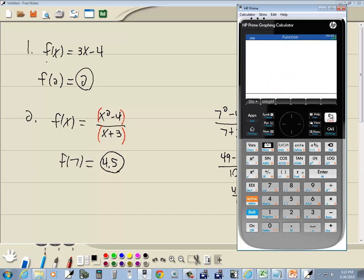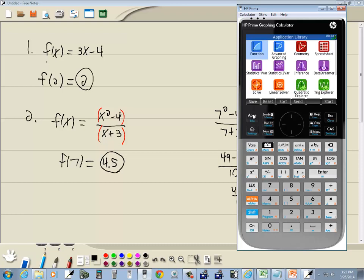I had to be in the first column to hit escape. That's interesting. And it throws you back here. Or you can press apps and go back to your main menu. Anyway, that's evaluating functions on the HP Prime calculator using the table.